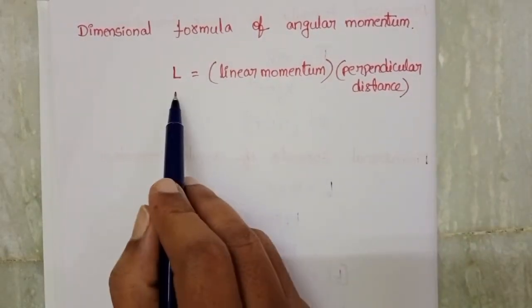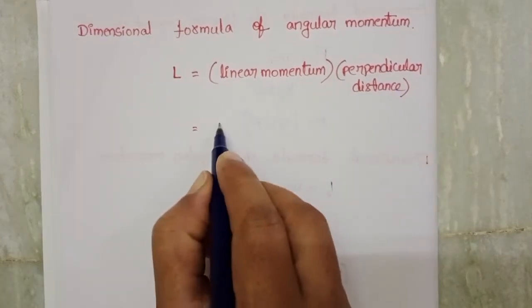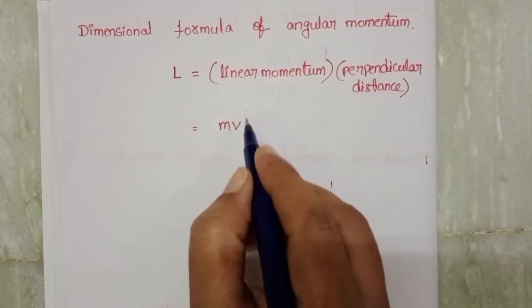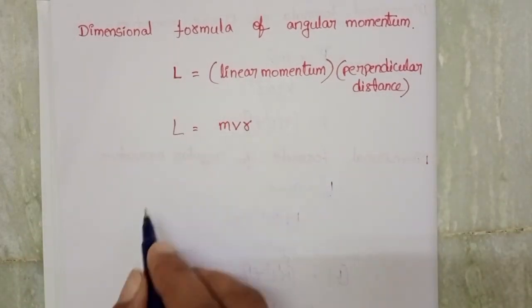This is the formula of angular momentum. Linear momentum equals mass times velocity. Perpendicular distance is denoted with R. So L = MVR.